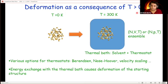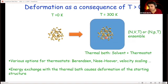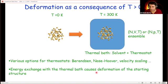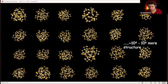Deformation is a consequence of non-zero temperature. At T equals zero we have some pristine structure of a quantum dot, and at T equals 300K the system exists in a distribution of structures. Not only does it exist in a distribution of structures due to finite temperature, but in a condensed medium it is surrounded by solvent. The energy exchange with the thermal bath causes deformation from the starting minimum energy structure.